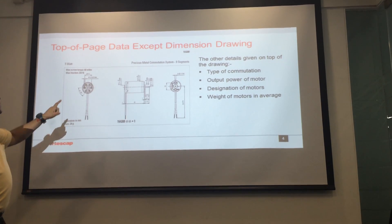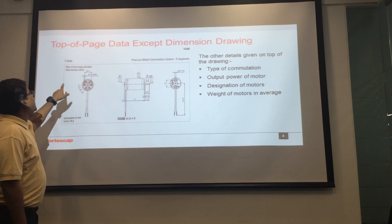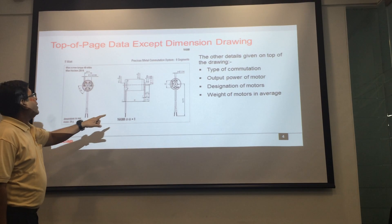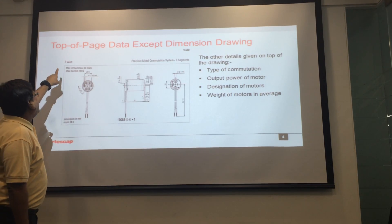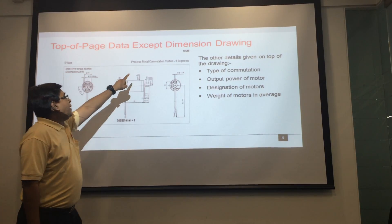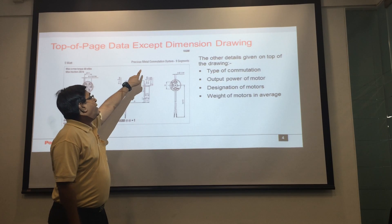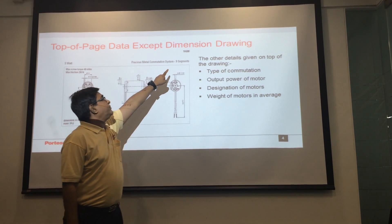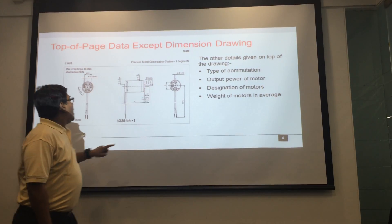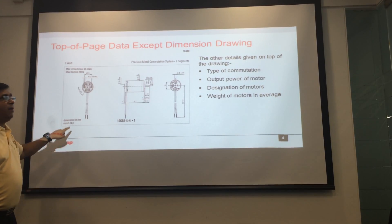The details other than mechanical dimensions that are specified on top are output power in watts, type of commutation — whether precious metal or graphite — number of segments, and the average weight in grams.